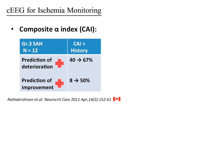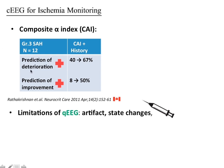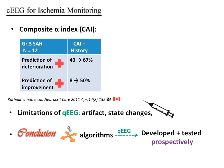Limitations of continuous EEG include artifacts in the ICU — state changes from EEG lead contact with skin can produce erroneous or misinterpreted results. Sedation use interferes with interpretation. More decision-making algorithms need to be developed and tested prospectively to create homogeneity in interpretation, as there is currently significant heterogeneity in how continuous EEG findings are interpreted.